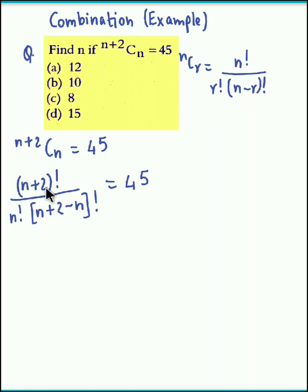Now n plus 2 factorial could be reduced to n factorial. So we could write this as n plus 2 into n plus 1 into n factorial divided by n factorial into n plus 2 minus n gets cancelled out. So we have 2 factorial. Now the value for 2 factorial is 2 which is equal to 45.